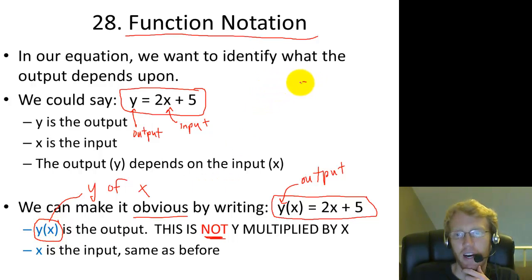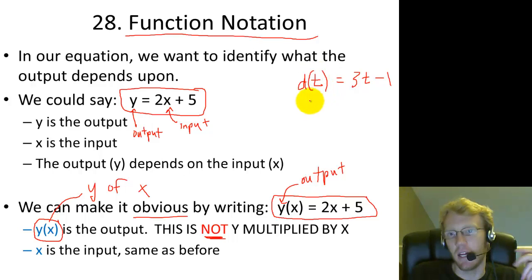You could also have d of t equals 3t minus 1. So what is the input? t, and you can see it's the input because it's inside the parentheses, the input is in the parentheses, and the output is outside of the parentheses. So it's kind of this nice mnemonic, input is in the parentheses, output is out of the parentheses, and this overall symbol is not d times t, it's d of t.